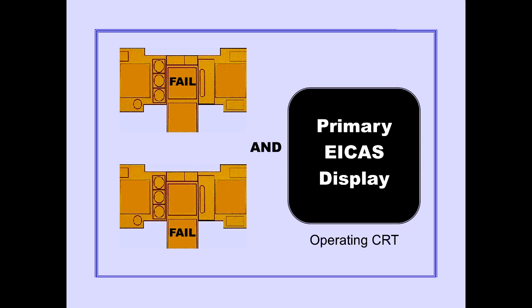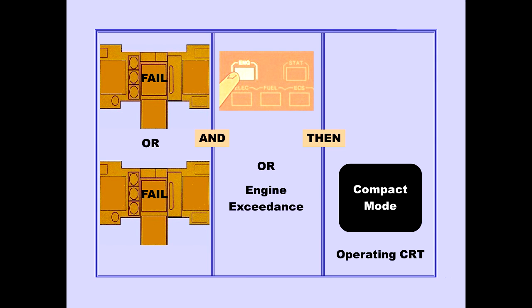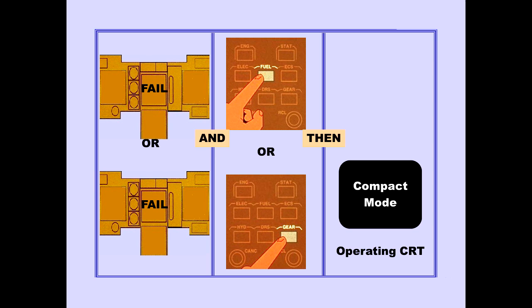If the upper or lower CRT fails, the primary ICAST display appears on the operating CRT. If the upper or lower CRT fails and the secondary engine display switch is pushed or an engine exceedance occurs, then the compacted CRT mode of the primary and secondary ICAST displays is displayed on the operating CRT. All data from the two displays is available except that it is presented in a less detailed format. If the upper or lower CRT fails and the fuel synoptic switch or gear synoptic switch is pushed, then the compacted mode is also displayed on the operating CRT.